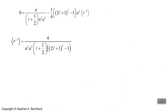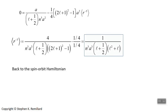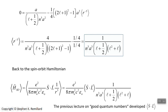We manipulate this by multiplying by one-fourth over one-fourth to get the one-fourth out of the numerator, and bring the one-fourth in the denominator inside the parentheses and simplify. This gives the expression you find published in books. Putting this expectation value of 1 over R cubed into the spin-orbit Hamiltonian, we have an expression for the expectation value of the spin-orbit Hamiltonian. But we still don't know the expectation value of S dot L.